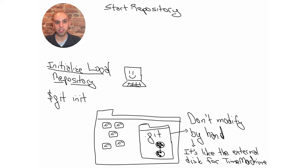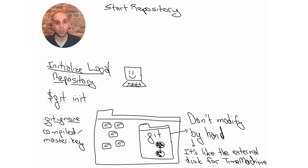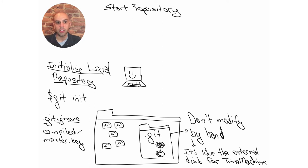Coming back to the Time Machine analogy, the .git directory is like the external disk in which the computer is backed up. The analogy isn't perfect because Git is not a backup system — it's not exactly providing any redundancy. If you lose the disk, you are going to lose the repository as well. But the analogy holds in the way that it's holding snapshots. The next thing Alice does is create a .gitignore file for the repository, listing files created by, say, the build system — like the PDF generated by the book. This belongs to the repository and will be the same for all contributors.